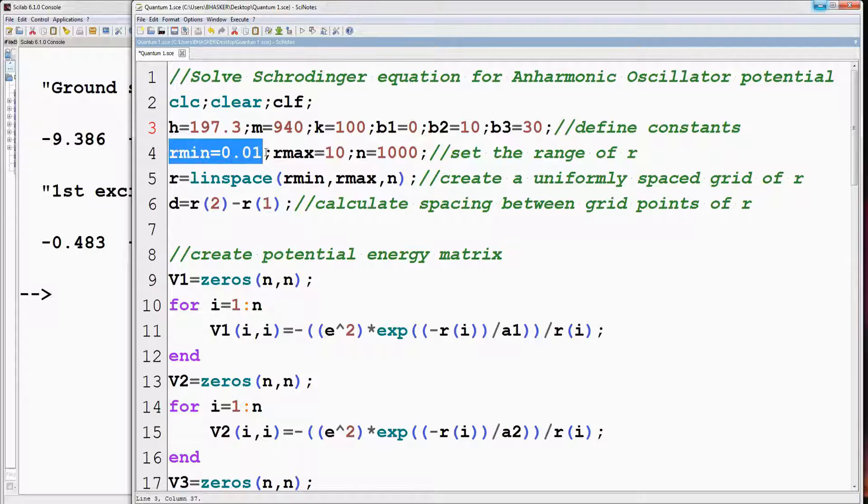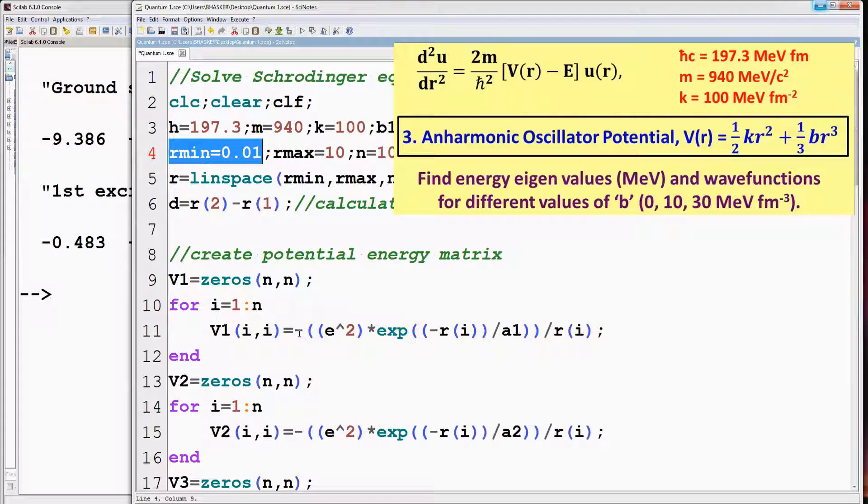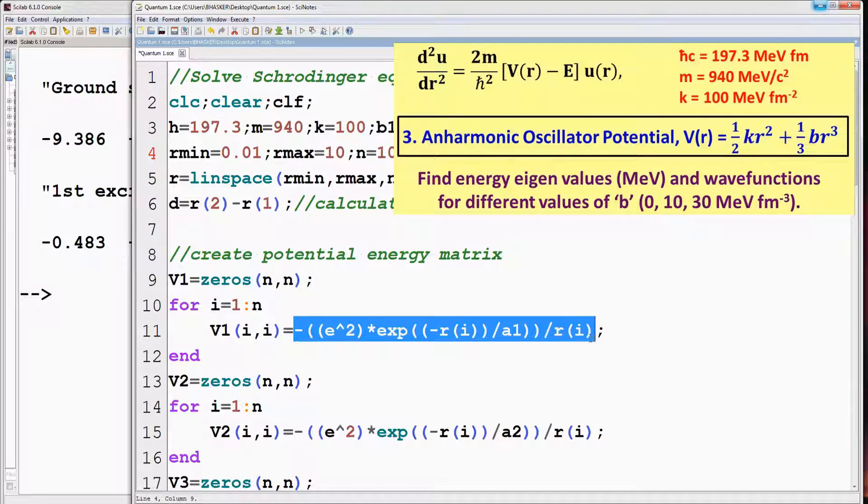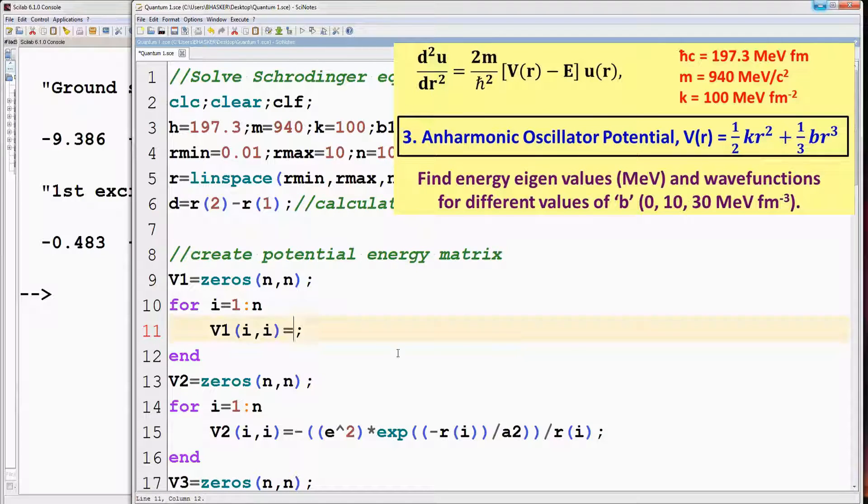Here r min can be 0 also. Now change the potential v1, v2 and v3 for different values of B.